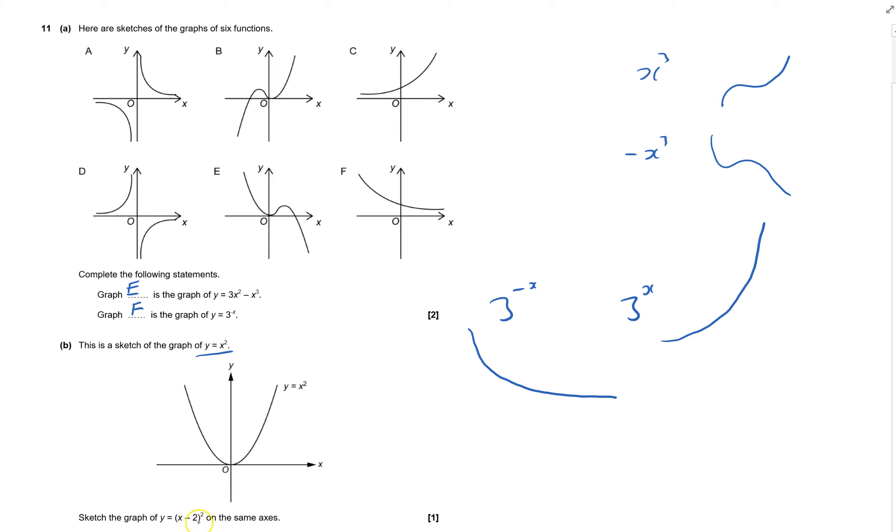then 0 take away 2 is minus 2. Minus 2 squared means minus 2 times by minus 2, which is 4. So that's one of the points. If x is 2, 2 minus 2 is nothing squared, that'd be nothing. So x is 2, x is 4, 4 take away 2 is 2, and 2 squared goes like that.